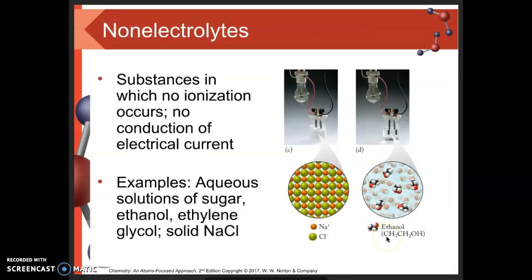Non-electrolytes are substances where we don't have any ionization occurring and no conductivity of electricity. We tend to see this most often with aqueous solutions of polar organic materials. For example, sugar is a polar organic material — its polarity allows it to dissolve in water, but the covalent bonds inside sugar are too strong for water to break apart into ions. The same is true for ethanol and ethylene glycol.